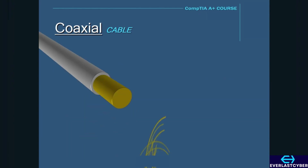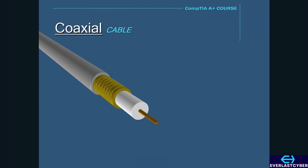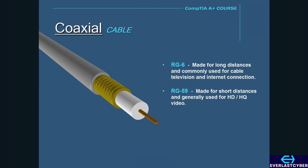Coaxial cable is used today primarily by cable providers to give computers broadband internet connections. Early on, it was used as a backbone for networks such as bus networks. There are two common types of coaxial cable. The first is RG6, which is made for long distances and is commonly used for cable television and internet connections. The second is RG59, which is made for short distances and is commonly used for high-definition, high-quality video.